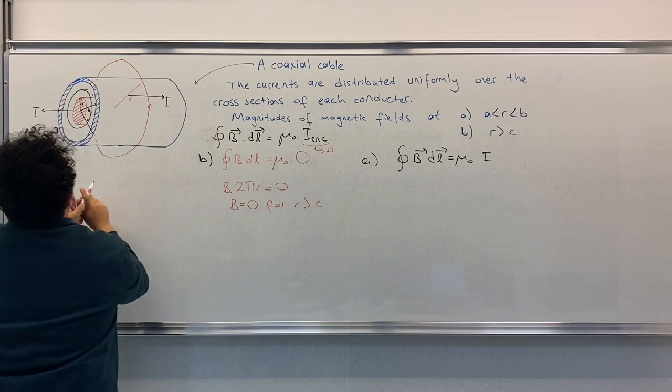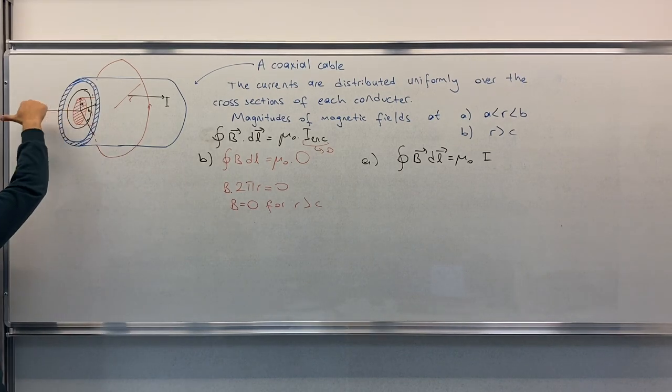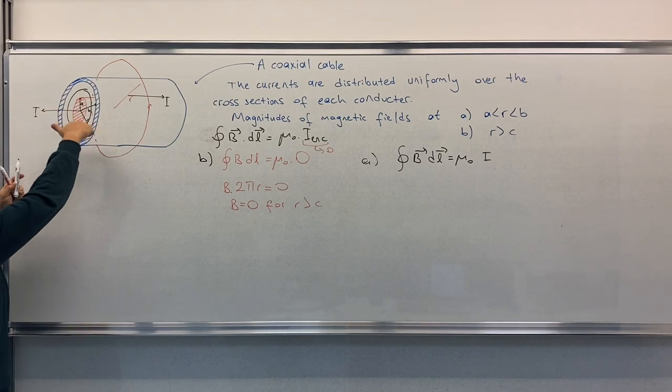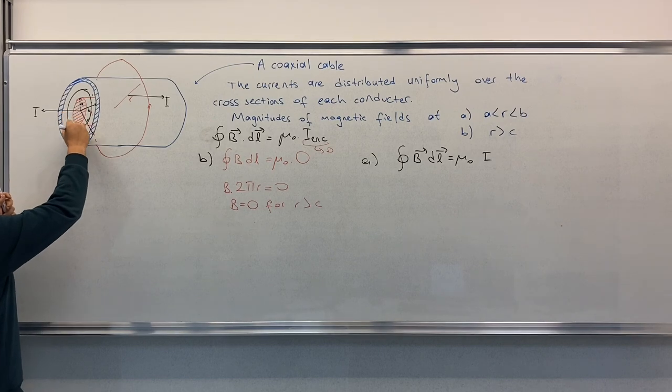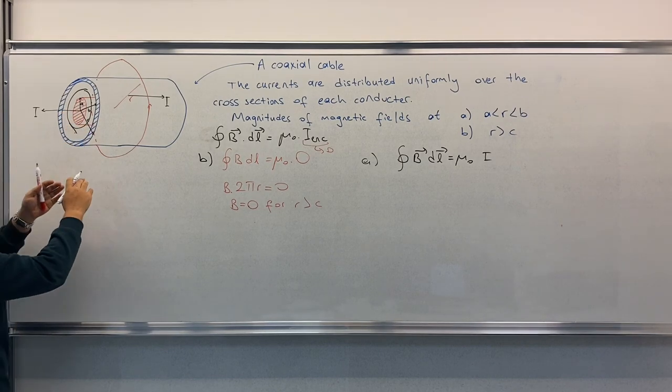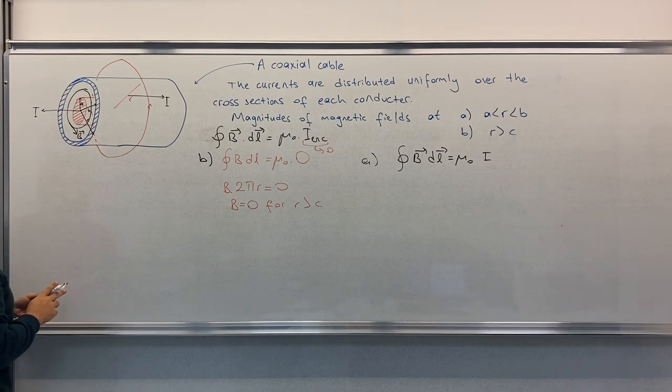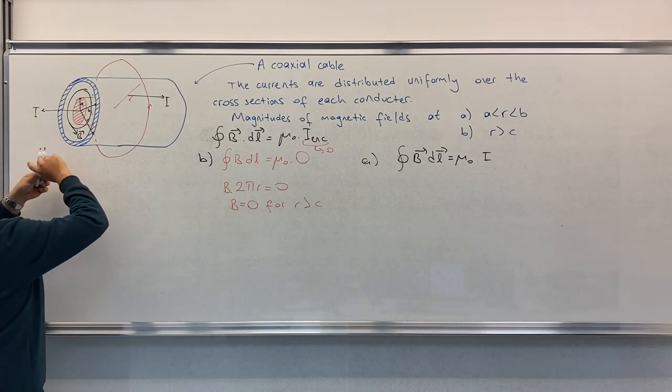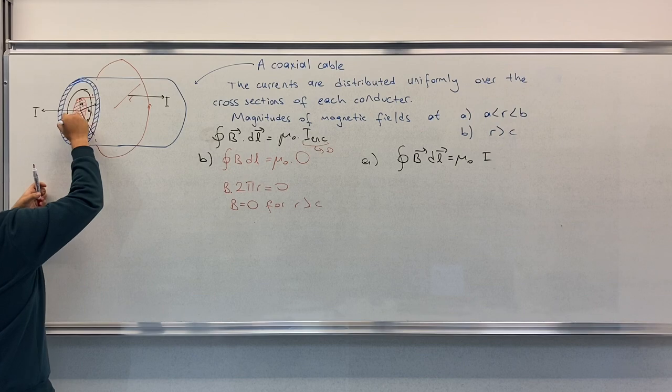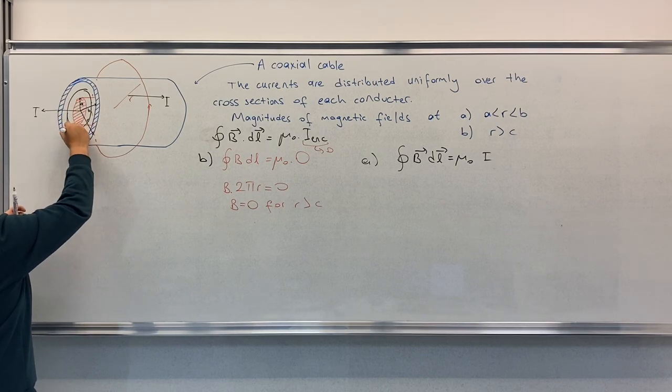Again, remember, because of this I, we have a magnetic field in this direction. B. Also, DL is in that direction for all the circles.